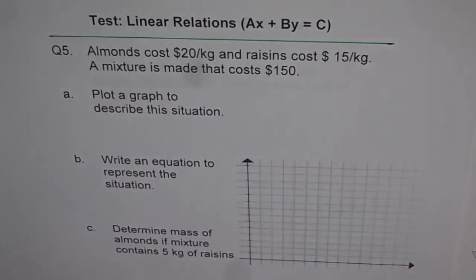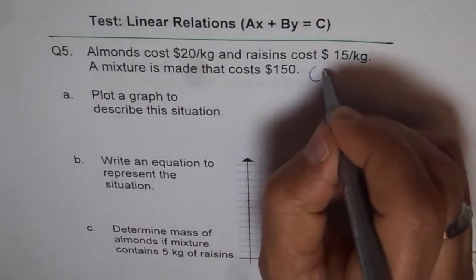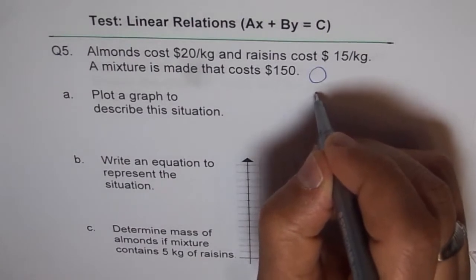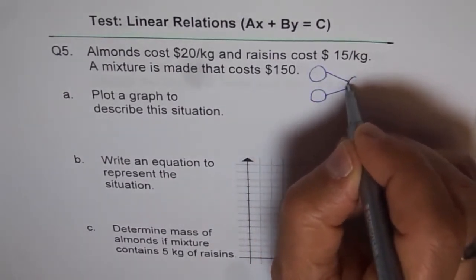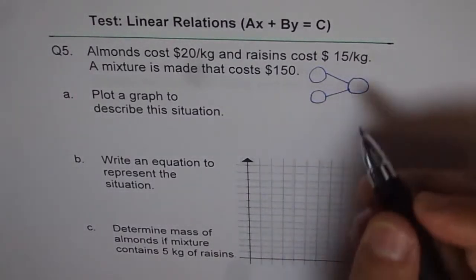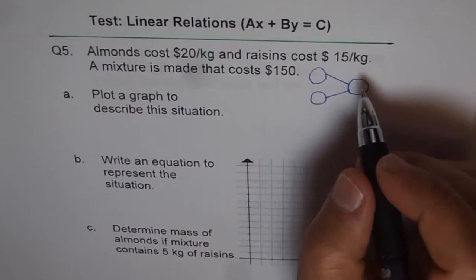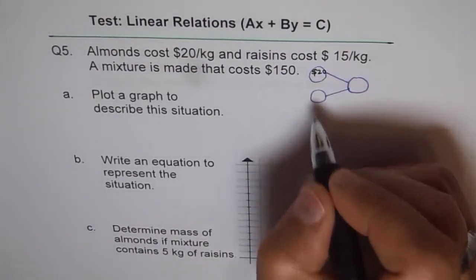So what has really happened is that we have added two types of dry fruits here. So we have almonds and we have raisins. And we just combine them together and make another mixture. So that is how we are working on it. And in this, we say that the cost of each is $20, and that is for almonds.